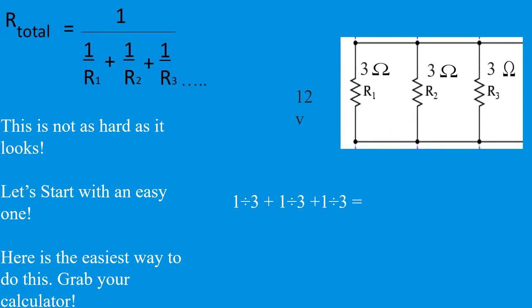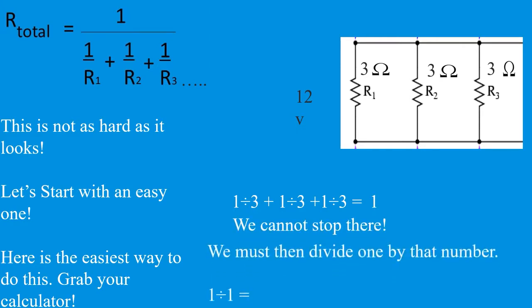We take 1÷3 plus 1÷3 plus 1÷3 and push equals — that gives us one. Now to take the reciprocal of that number, we take one and divide it by that number, which happens to be one in this case, giving us one. We must then divide that number into one — 1÷1 — and the total resistance is going to be one ohm.